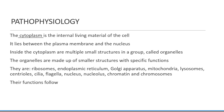The cytoplasm is the internal living material of the cell. It lies between the plasma membrane and the nucleus. Inside the cytoplasm are multiple small structures called organelles, which are made up of smaller structures with very specific functions. They are ribosomes, endoplasmic reticulum, Golgi apparatus, mitochondria, lysosomes, centrioles, cilia, flagella, the nucleus, nucleolus, chromatin, and chromosomes.